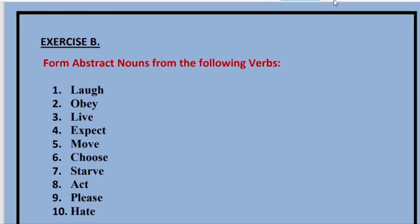In Exercise B, what we are told to do is form abstract nouns from verbs. The abstract nouns we have to state from these particular verbs. The first one is 'laugh.' From 'laugh,' which is a verb, what would be the abstract noun? It would be 'laughter' — L-A-U-G-H-T-E-R. We cannot touch laughter, so it is an abstract noun.